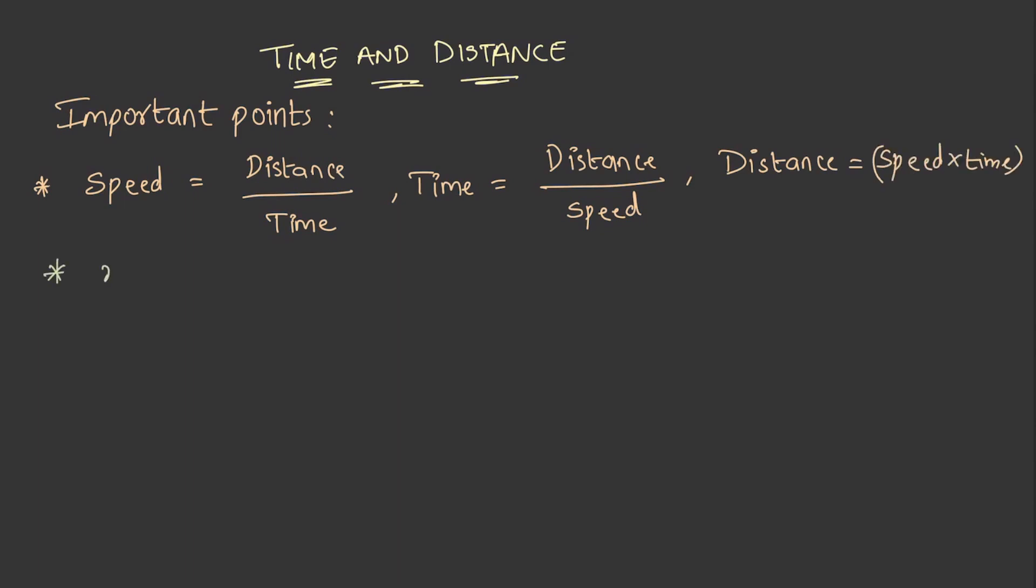For the conversion from x kilometers per hour to x meters per second, the value should be multiplied by 5 by 18.